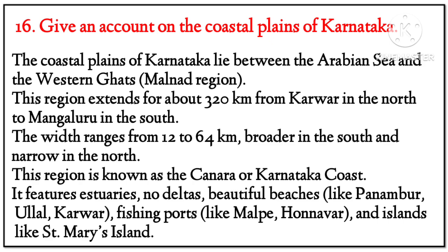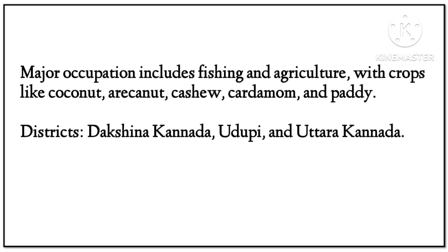Question 16: Give an account of the coastal plains of Karnataka. Answer: The coastal plains of Karnataka lie between the Arabian Sea and the western Ghats — Malenadu region. This region extends about 320 kilometers from Karwar in the north to Mangaluru in the south. The width ranges from 12 kilometers to 64 kilometers — broader in the south and narrow in the north. The region is known as the Karavali or Karnataka coast. It features estuaries, no deltas, beautiful beaches like Panambur and Karwar, fishing ports like Malpe and Mangalore, and islands like St. Mary's. Major occupation includes fishing and agriculture, with crops like coconut, areca nut, cashew, cardamom, and paddy. Districts: Dakshina Kannada, Udupi, and Uttara Kannada.